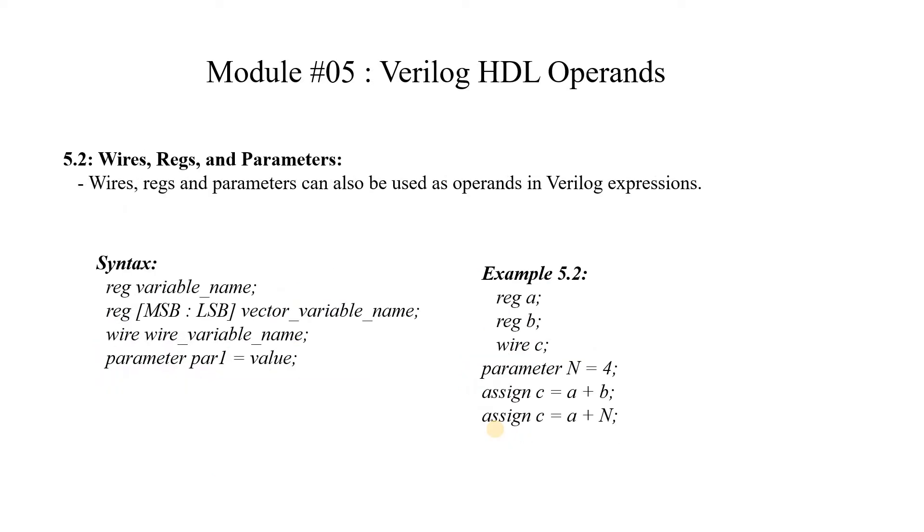Now let's see another type of operands. In Verilog HDL we can have other operands which can be type of wire, register or parameters. A register can be declared as we covered in our previous module of data types. This is a scalar quantity and this is a vector quantity. A wire we can declare like this and this is the way we can declare a parameter.